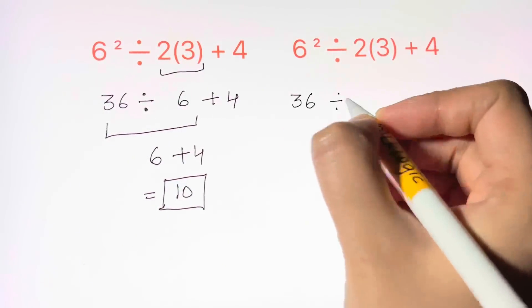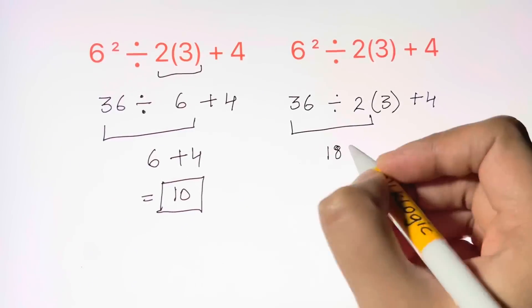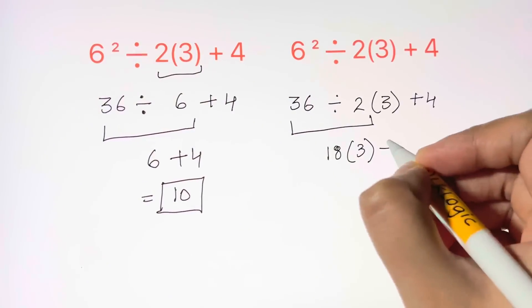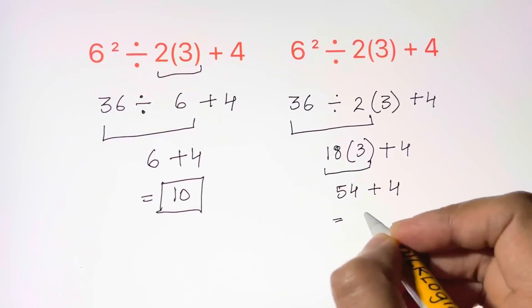Now in the other method we're going to solve the exponent, that is 36 divided by 2 times 3 plus 4. Now we'll do 36 divided by 2, and that's 18. 18 times 3 plus 4. 18 times 3 gives us 54 plus 4 gives us 58.